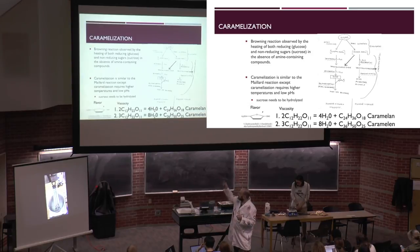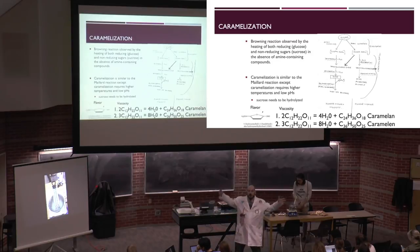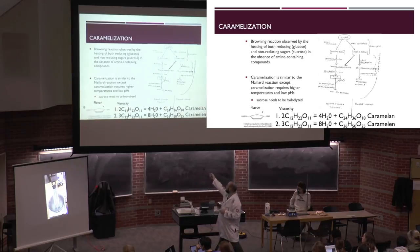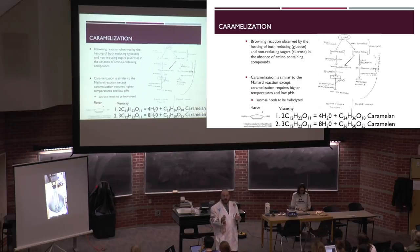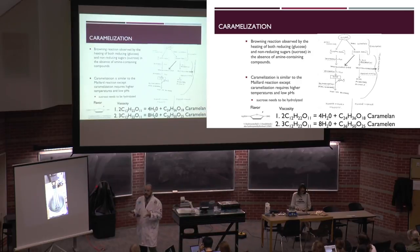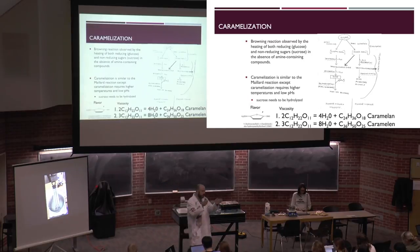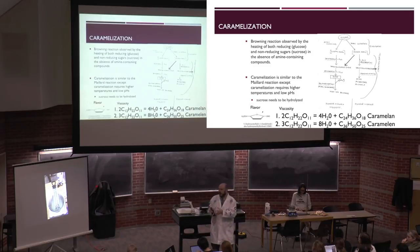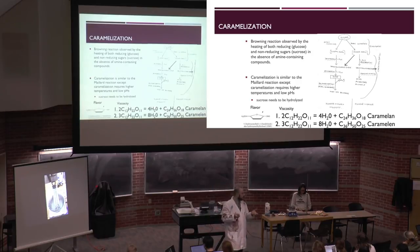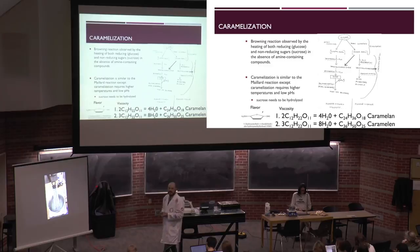During caramelization, HMF — that characteristic caramel flavor compound — undergoes condensation reactions to produce two different polymers that differ based on chain length: caramelan and caramelene. The smaller molecule, caramelan, doesn't impart much viscosity and is used mainly as a colorant. If you drink Coke, Diet Coke, or Pepsi, that colorant is caramelan — a byproduct of the caramelization reaction.